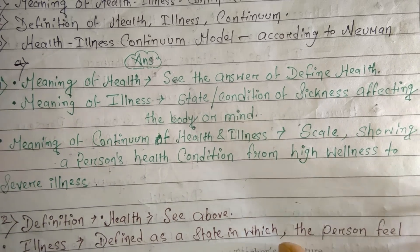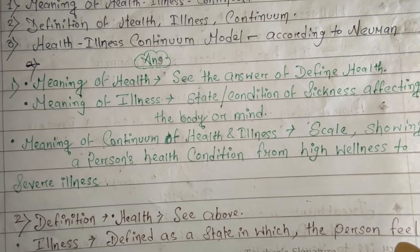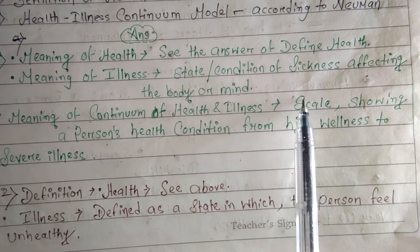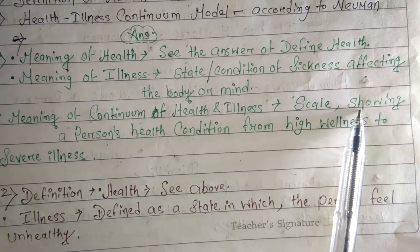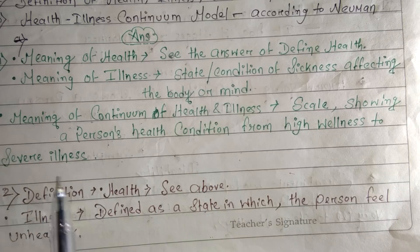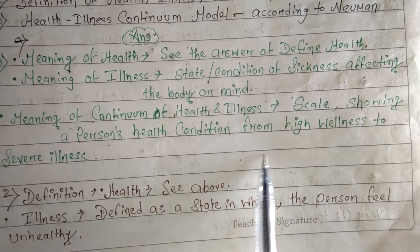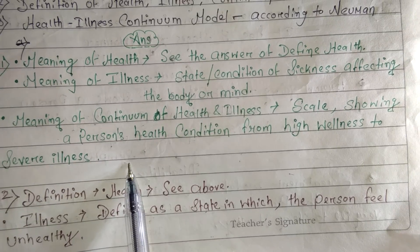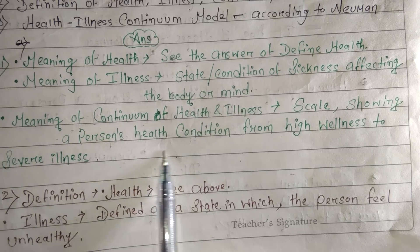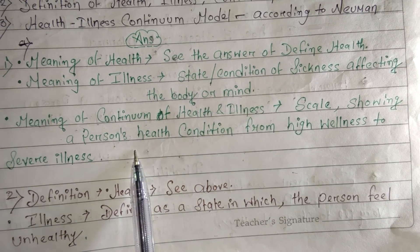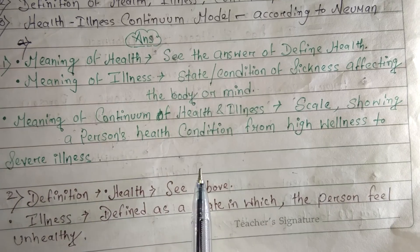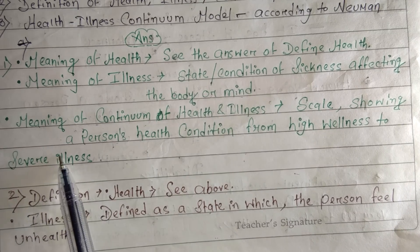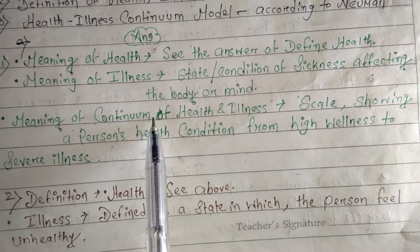Now the meaning of continuum — let's understand it. Continuum is a scale showing a person's health condition from high wellness to severe illness. Suppose it is a scale: on one side the patient is very well, and on the other side the patient is very ill. This scale shows whether the patient is very ill, very well, or in a neutral position. So continuum is a scale showing very high wellness or severe illness. I will show you the continuum scale.